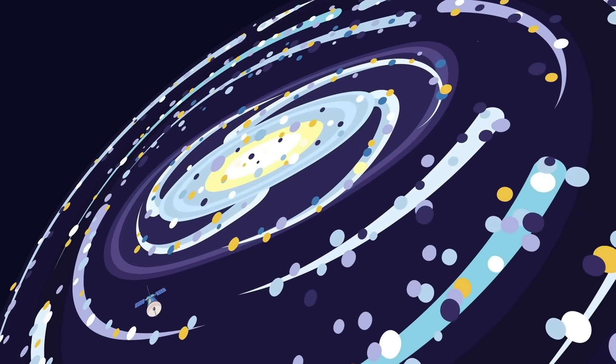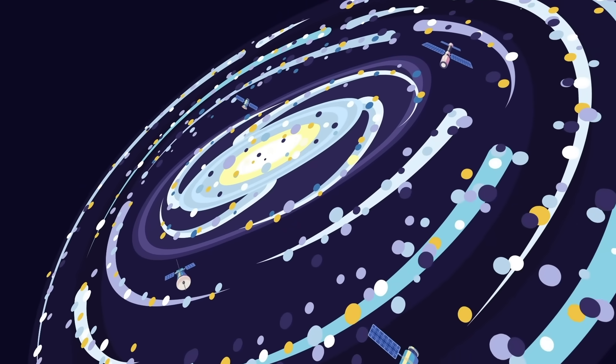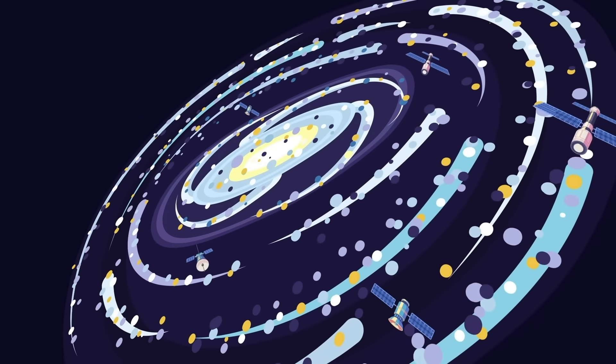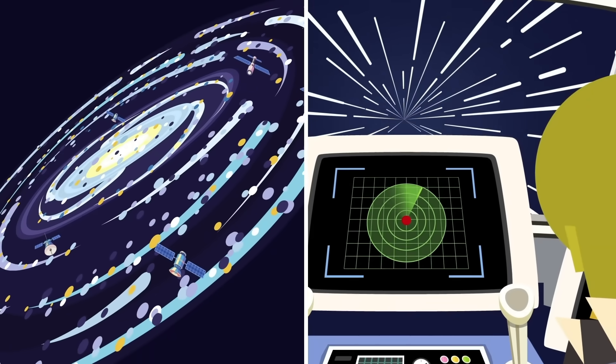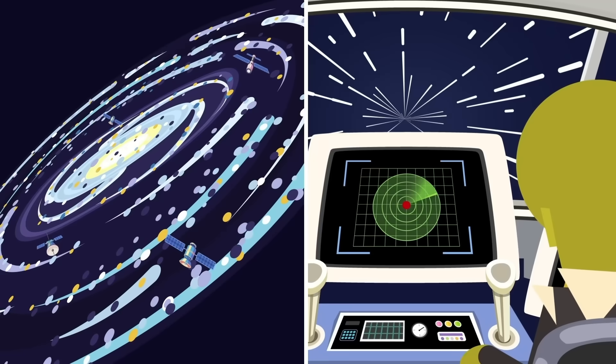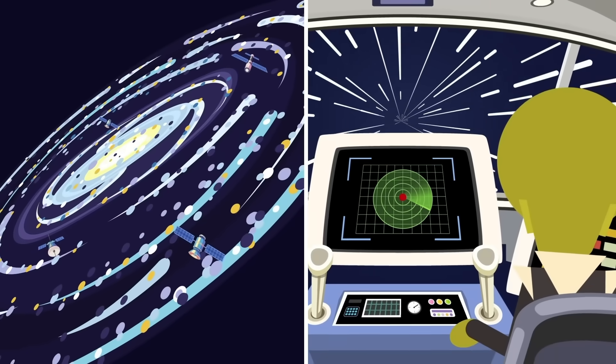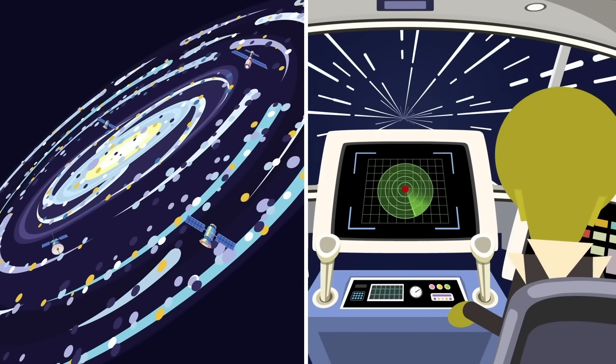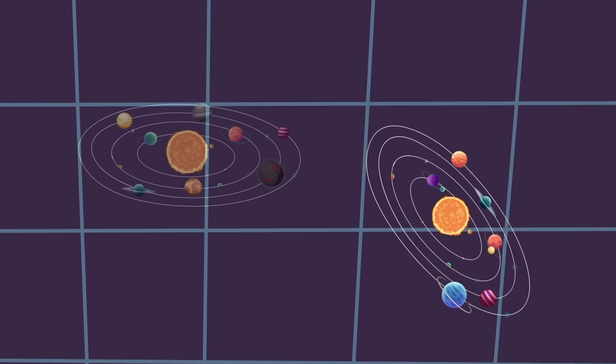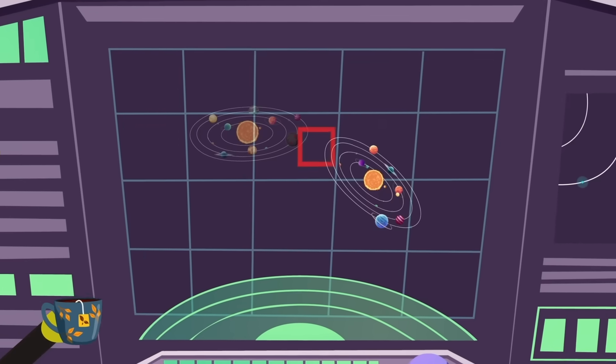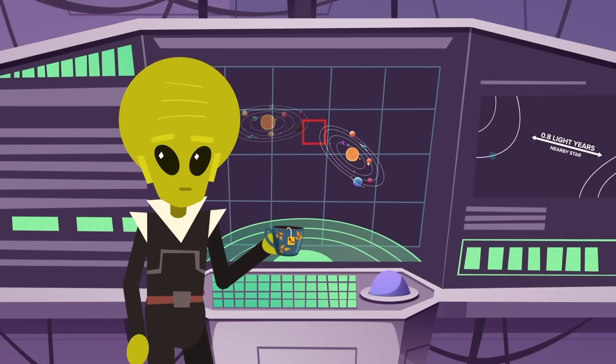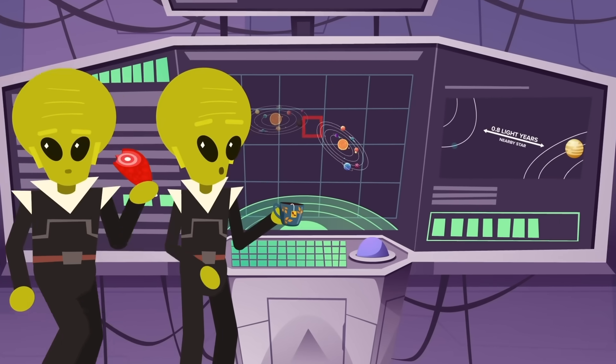At our current technological level, humanity could put a probe in every solar system in our galaxy within just two to four million years. Add an exotic propulsion technology that can accelerate a spacecraft to a significant chunk of the speed of light, and an advanced species could do it within hundreds of thousands of years. But even if another species simply waited for their orbit around the galactic center to bring them closer to another star system, they could be sending probes to other solar systems every few tens of thousands of years.